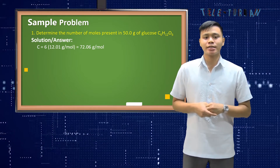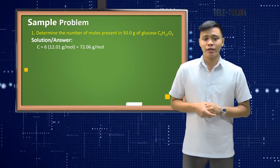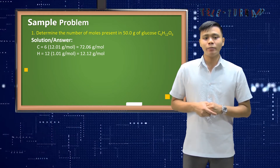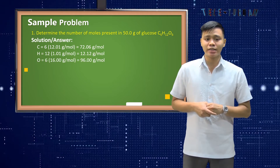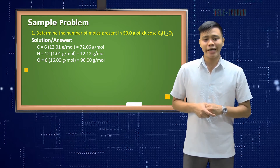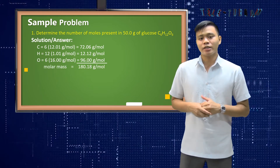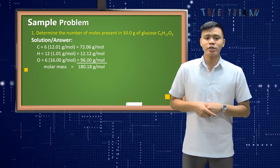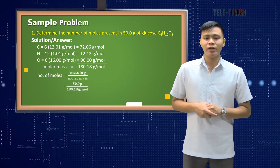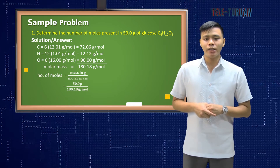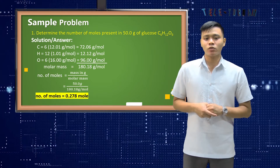Carbon (C) is equal to 6 times 12.01 grams per mole, which equals 72.06 grams per mole. Hydrogen is equal to 12 times 1.01 grams per mole, which equals 12.12 grams per mole. Oxygen is equal to 6 times 16 grams per mole, which equals 96 grams per mole. Adding all the molar masses gives 180.18 grams per mole. Using the formula: number of moles equals mass in grams divided by molar mass — that is 50 grams divided by 180.18 grams per mole — the number of moles is equal to 0.278 mole.